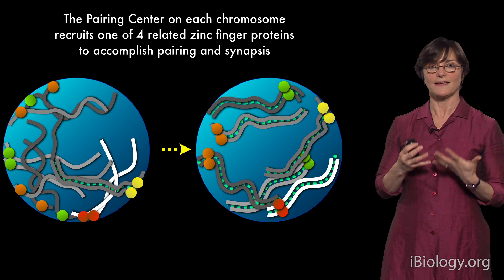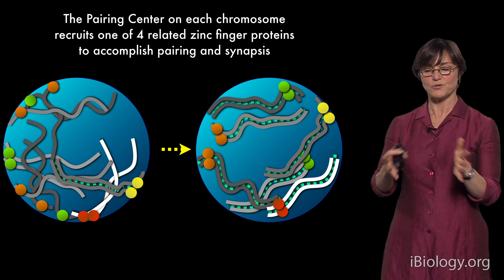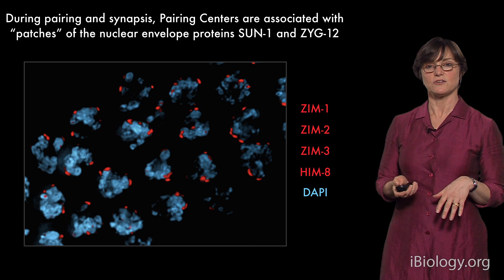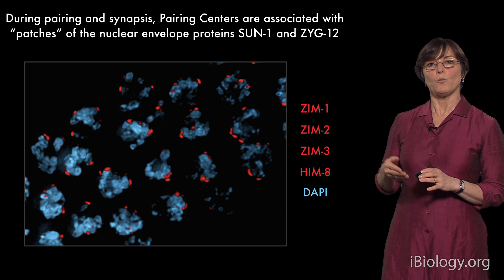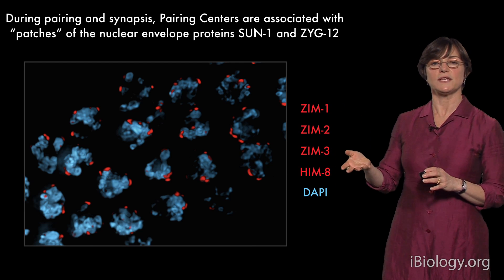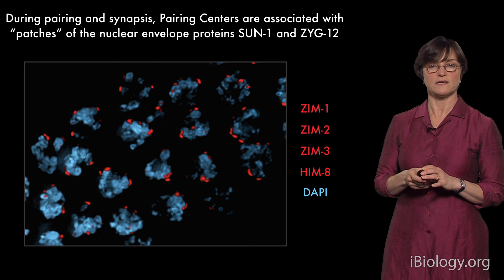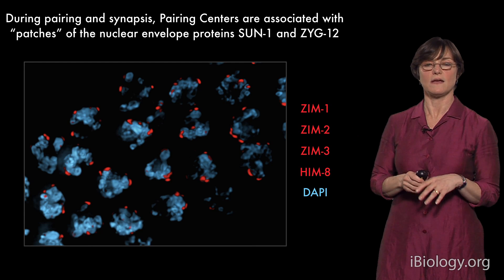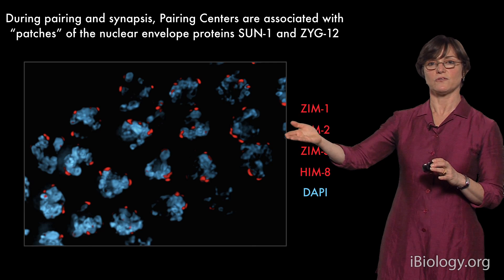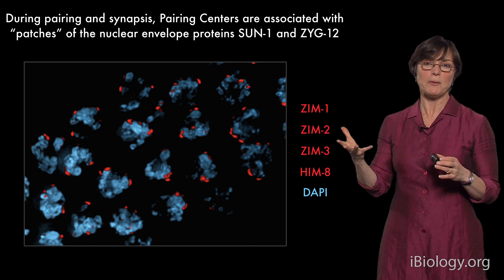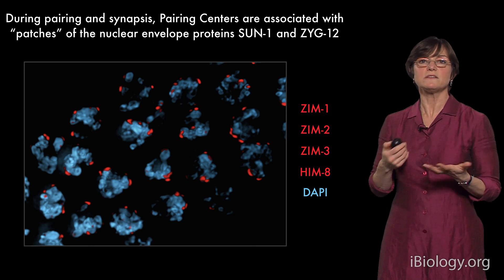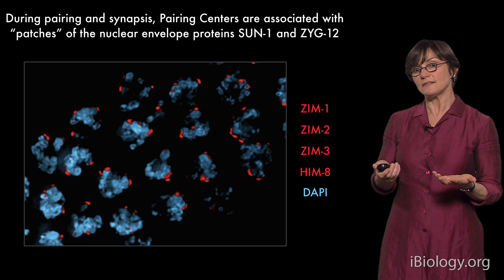One of the first key observations that pushed this work forward was kind of fortuitous, and I'll show you what we saw. When we localized the pairing centers — here using antibodies against all of the zinc finger proteins in red — what we see is that they're distributed apparently randomly around the nuclear periphery. And we wanted to know what they were interacting with.